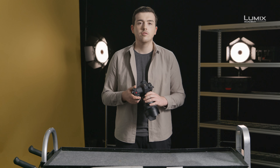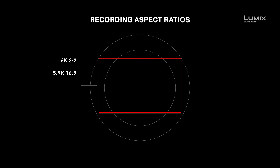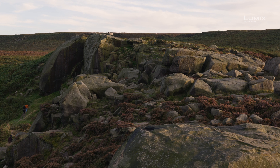The S1H comes equipped with a 24-megapixel sensor capable of recording up to 6K resolution in 3x2 aspect ratio, and 5.9K resolution in 16x9. On top of these, you have the ability to shoot in Cinema 4K resolution — the standard for cinema — UHD 4K, the 16x9 standard for television, 4x3 Super 35 Anamorphic 4K, as well as 1080p Full HD modes.